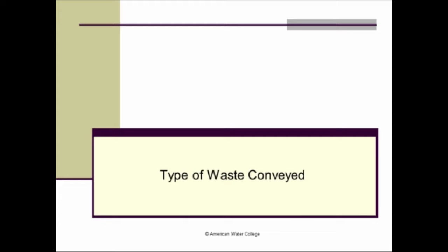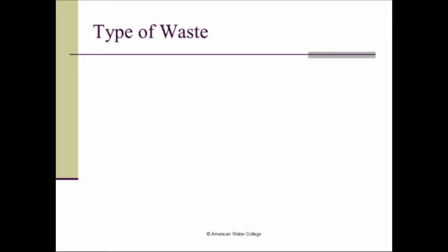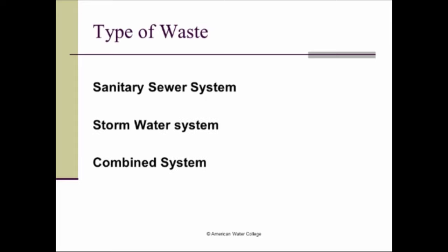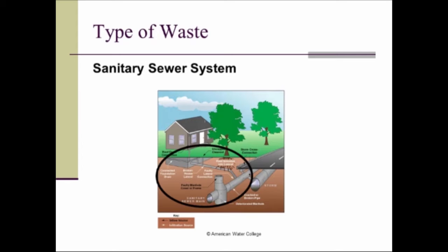Now we'll talk about the different types of waste conveyed in the system, which dictates what the system is called. There are three basic types: the sanitary sewer system, a stormwater system, and a combined system. In the sanitary sewer system, it is split out from any storm drain — the only thing that goes in it is sanitary waste, such as human waste. We don't want any water in it other than sanitary waste. We'll talk about inflow and infiltration a little bit later.